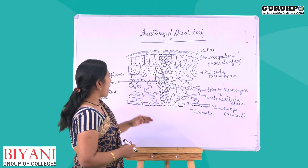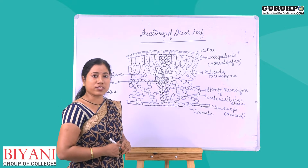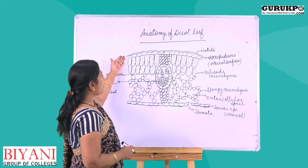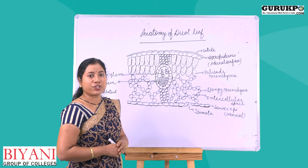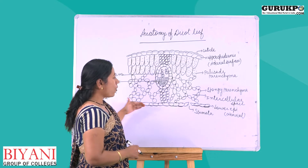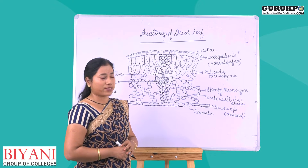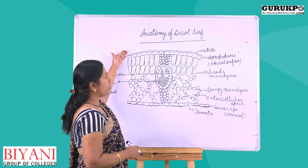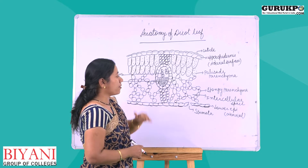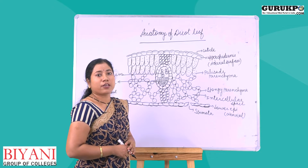Epidermis covers both the upper and lower surface of the leaf. The upper epidermis is also known as the adaxial surface and is covered by a thick cuticle. The lower epidermis is known as the abaxial surface. One key difference is that the lower epidermis bears more stomata than the upper epidermis.